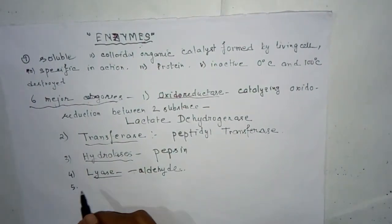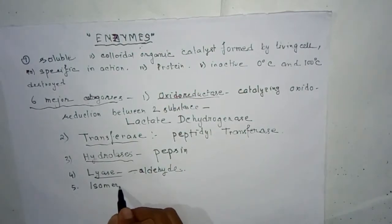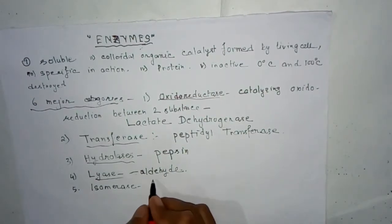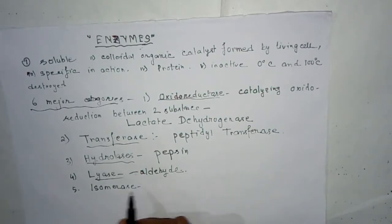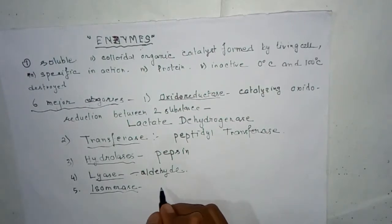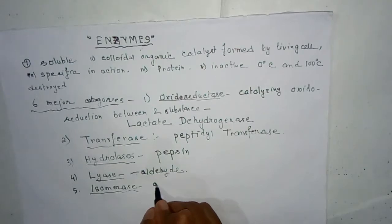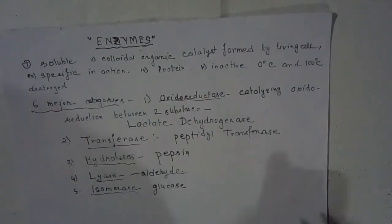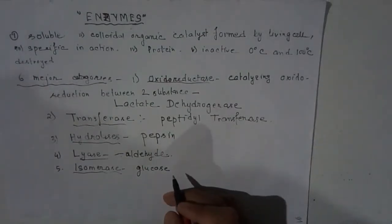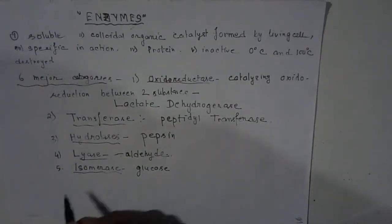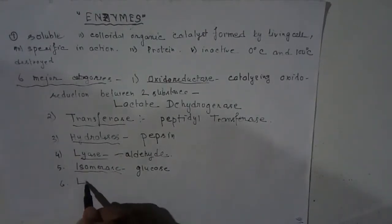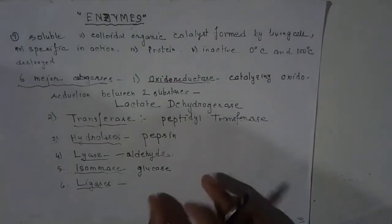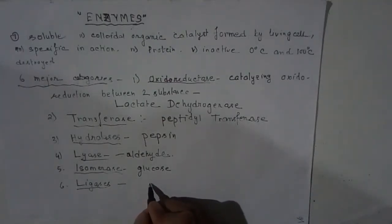Number five is isomerase, which causes the conversion of a substrate into its isomer. An example is glucose. Number six is ligase — this links two substrates together by the action of ligase. An example is DNA ligase.